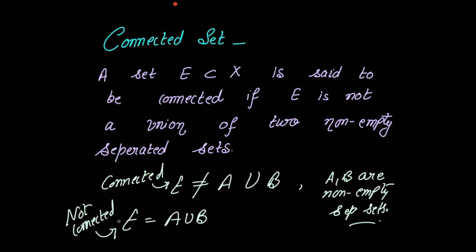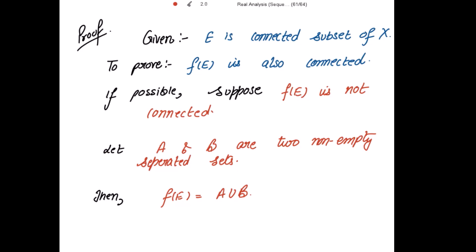Please note the remark: if E is connected, then it cannot be written as the union of A and B where A and B are non-empty separated sets. If E is not connected, then it can be written as such a union. Here I am saying F of E is not connected, so I can write F of E to be the union of A and B.